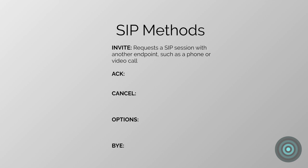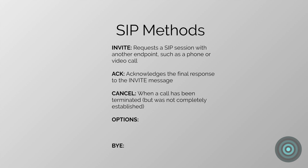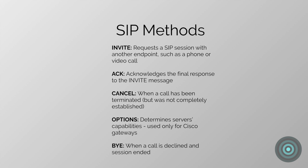The first method is INVITE, which is when a SIP endpoint sends a message to another endpoint to request a SIP session. There's also ACK — a SIP endpoint can send and receive several responses to an invite, and the ACK message acknowledges the final response to the INVITE. Then there's CANCEL, which terminates a call that hasn't been completely established. OPTIONS is used only for Cisco gateways and queries servers to determine their capabilities. And then there's BYE, used when the call is declined or when you hang up and the call is terminated.